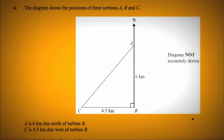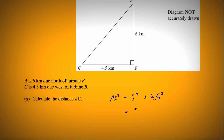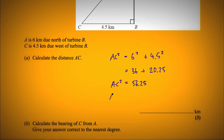Question 4: turbine A is 6 km due north of B, and C is 4.5 km due west of B. A right angle is already marked, so this is a Pythagoras question. AC squared equals 6 squared plus 4.5 squared, which is 36 plus 20.25 equals 56.25. So AC equals the square root of 56.25, which is 7.5 kilometres.